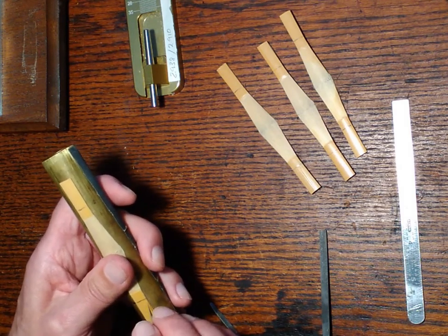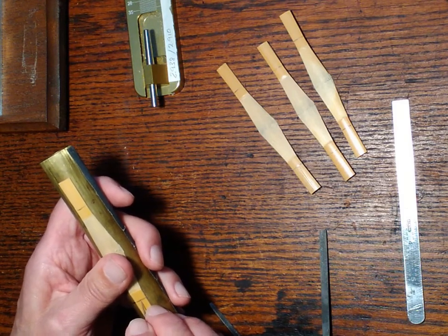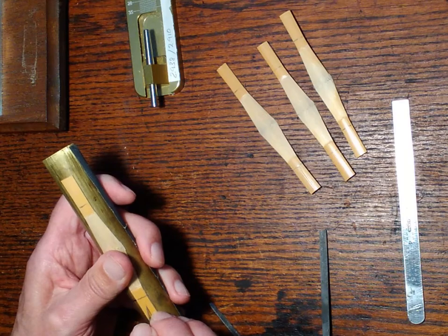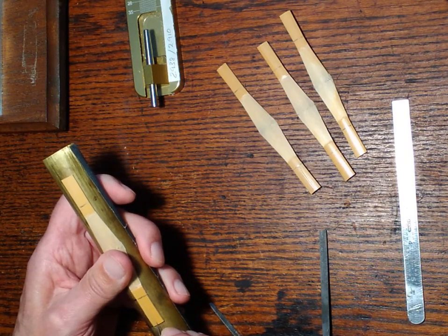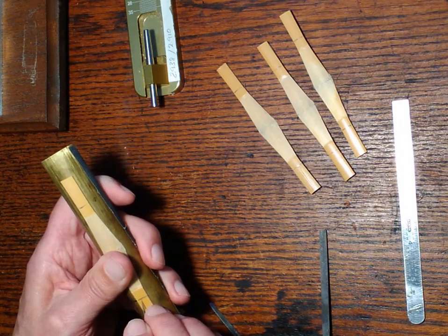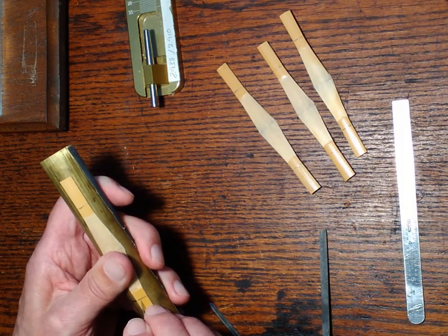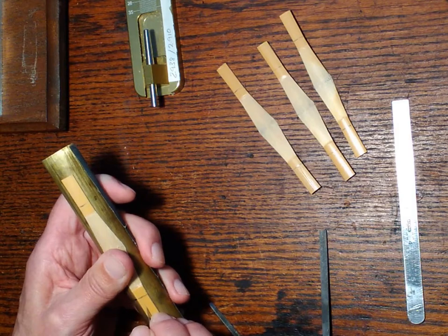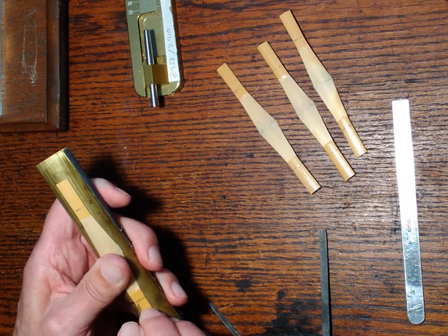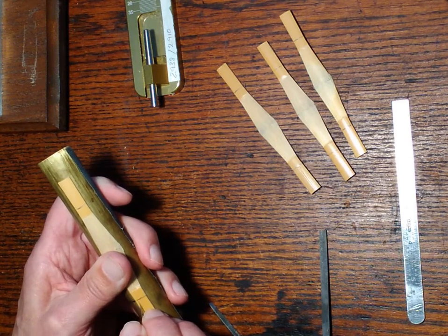I start in the middle and I make a score. I'm just trying to get through the bark, not trying to do anything more than that. Then I try to put three on each side, the same length, and as evenly spaced as I can do it.